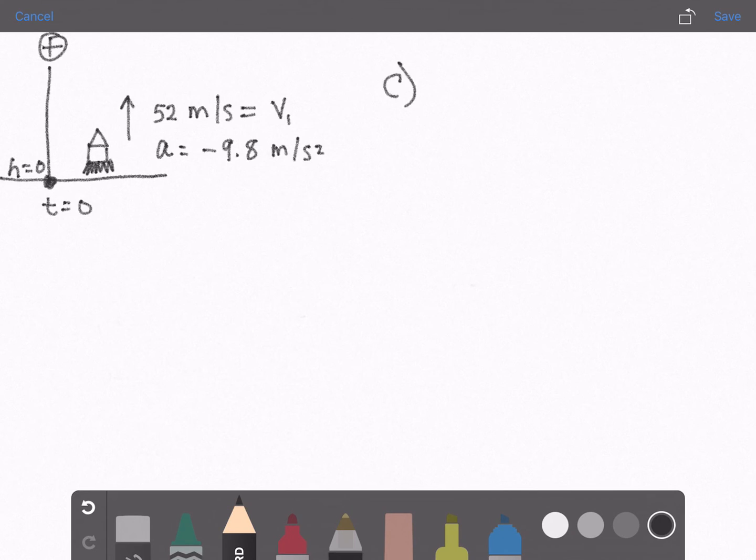Part C: Find velocity at 7 seconds. We use this equation v1 plus a times t equals v2, and we are solving for v2.